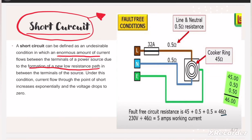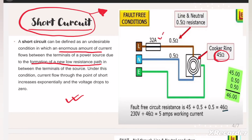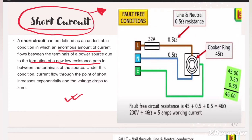To understand short circuit, let us consider a healthy circuit first and then create a short circuit condition. Here I have a healthy circuit with an electrical cooker having a resistance of 45 ohms. The wire resistance is 0.5 ohm for the phase wire and 0.5 ohm for the neutral wire, and there is a circuit breaker rated at 32 amperes. Current flows from the line through the cooker and back to the neutral. The total resistance of this path is 0.5 + 45 + 0.5 = 46 ohms.